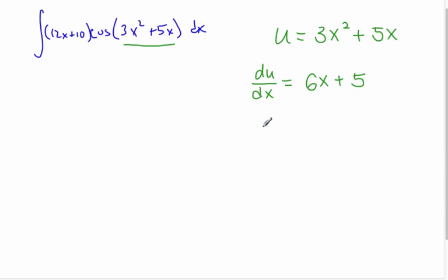And we'll multiply both sides by dx. So du is 6x plus 5. Now that's not what we have in our equation, but it's really close.